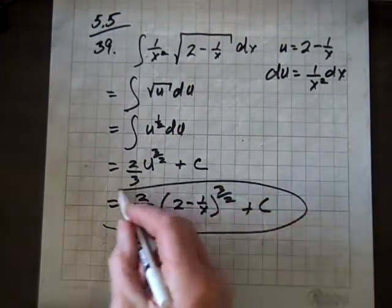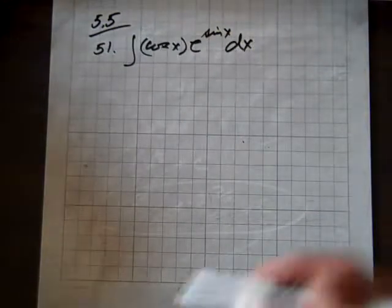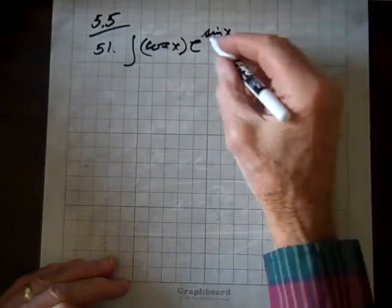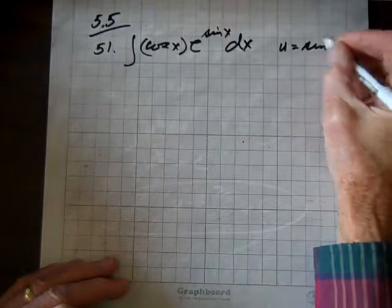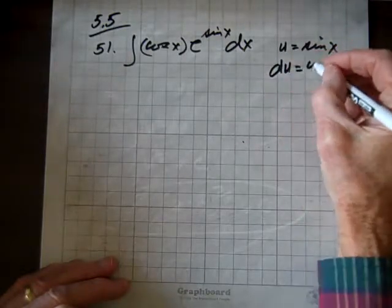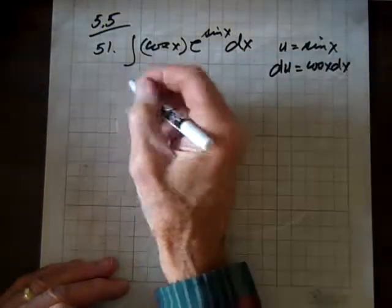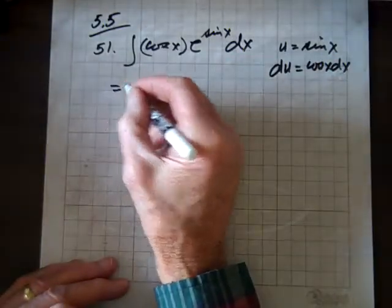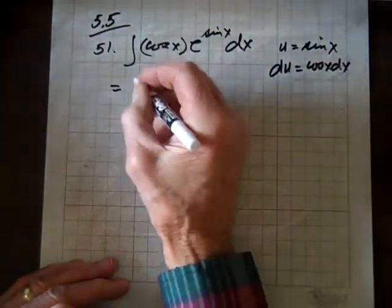And now we're doing question 51. U-du substitution. So let's let u equal sine x. And so du will equal cosine of x dx. And now we have, by the way, we have a perfect fit. There's our cosine sine of x dx. So that's our du.